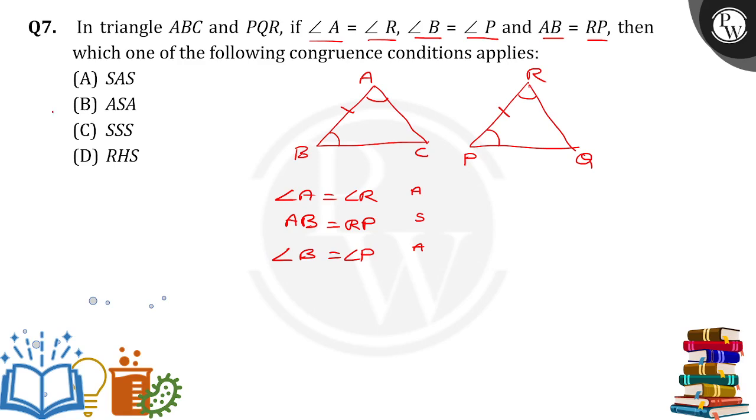So by means of ASA criterion, triangle ABC is congruent to triangle RPQ. So option B is the right answer. Thank you.